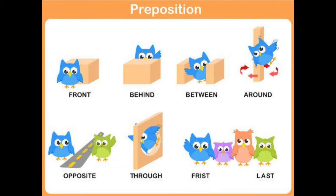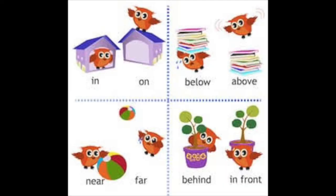What are these words: front, behind, between, around, opposite, through, first, last? They are telling us the position where exactly this bird is. In the same way, look at this picture. It is the position of the bird in the house, on the house, below the books, above the books, near the ball, far from the ball, behind the pot, in front of pot. Again this is telling us the position of the bird when compared to the other nouns.